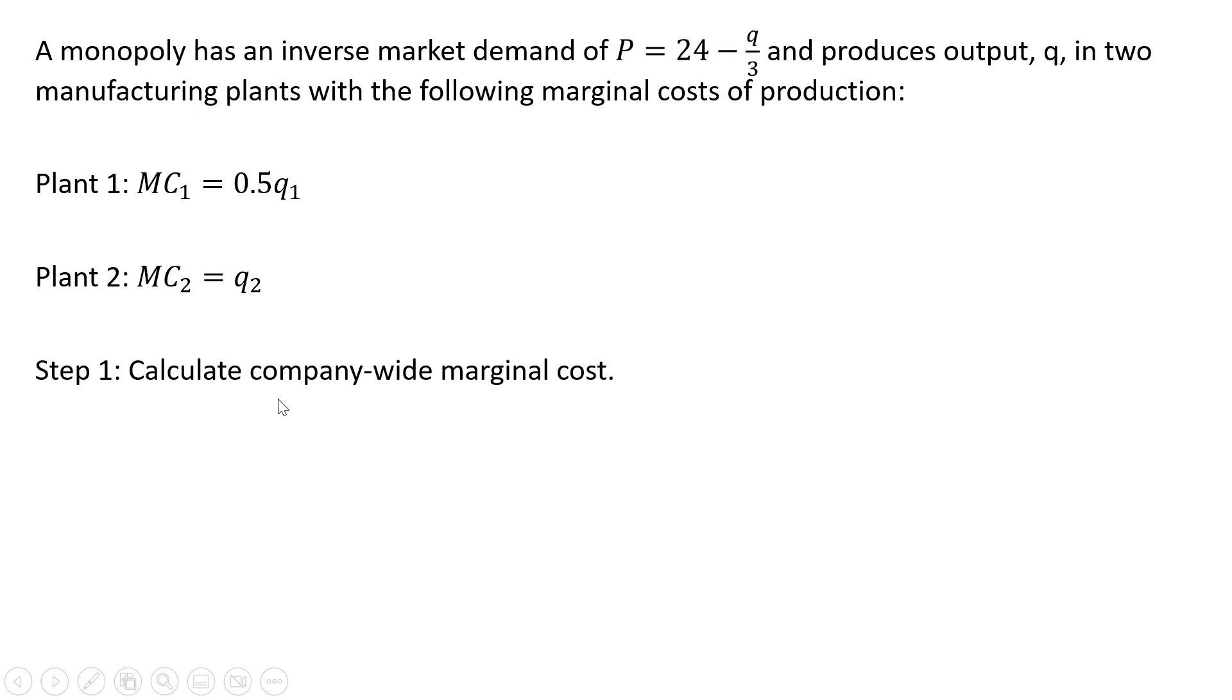We want to calculate the company-wide marginal cost. And the way we're going to do that, we're going to take plant one's marginal cost and we're going to solve it for the output Q subscript one. So dividing through by 0.5, we get output in plant one equals two times the marginal cost.